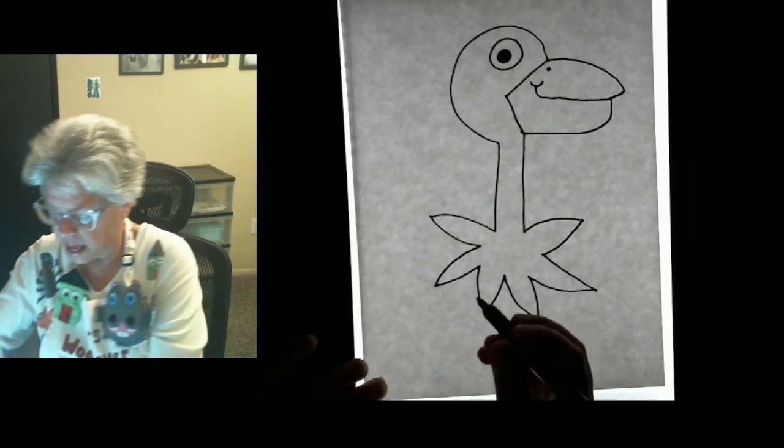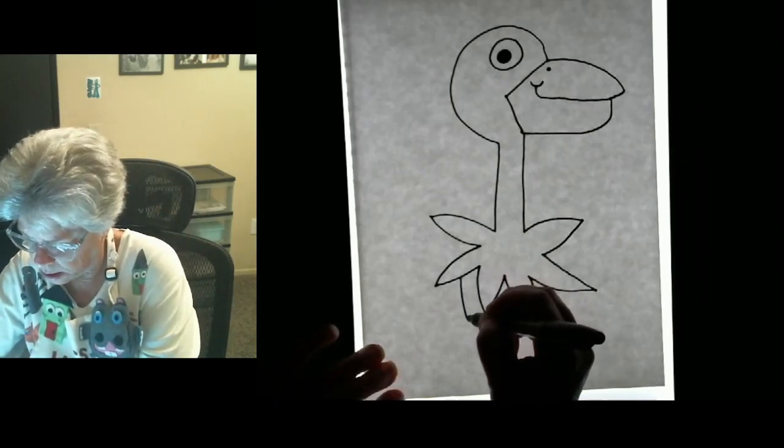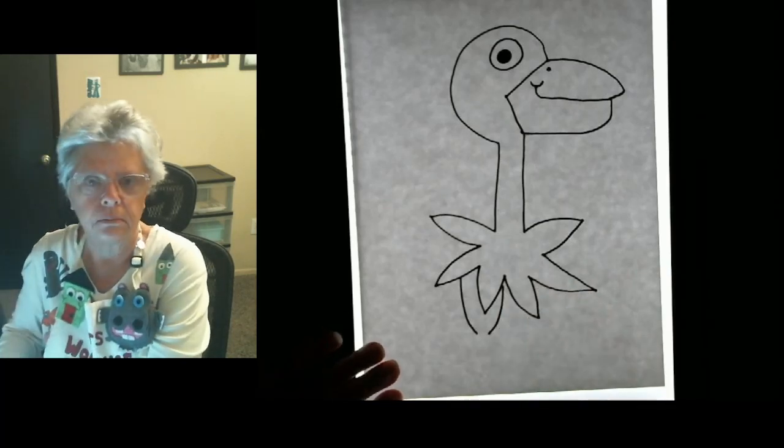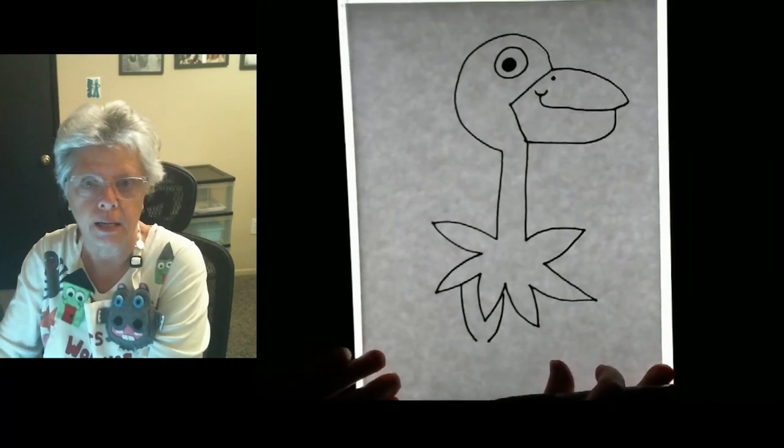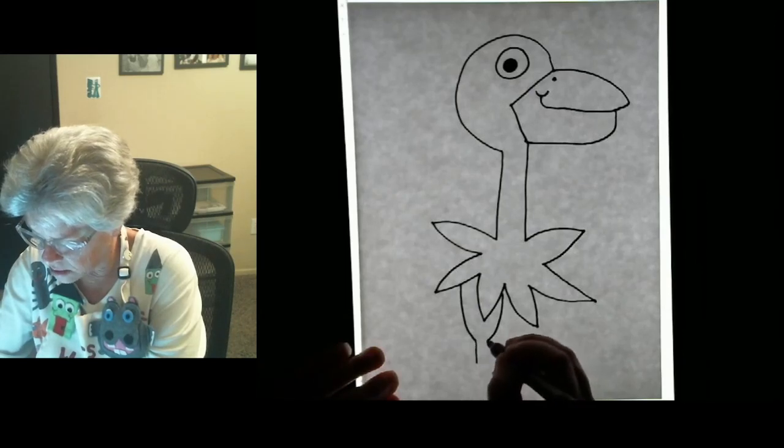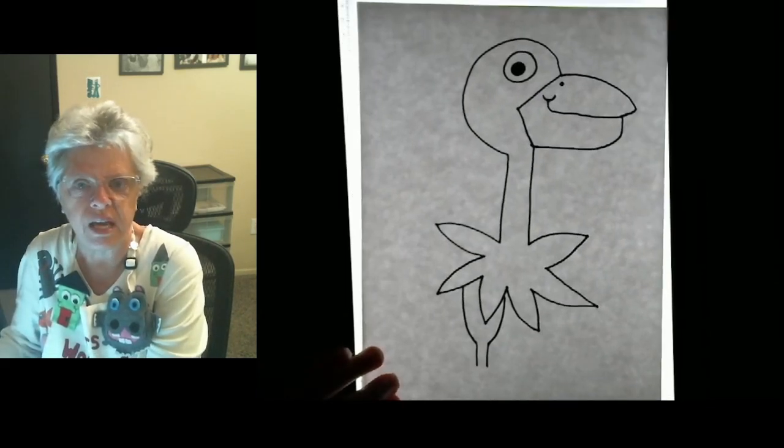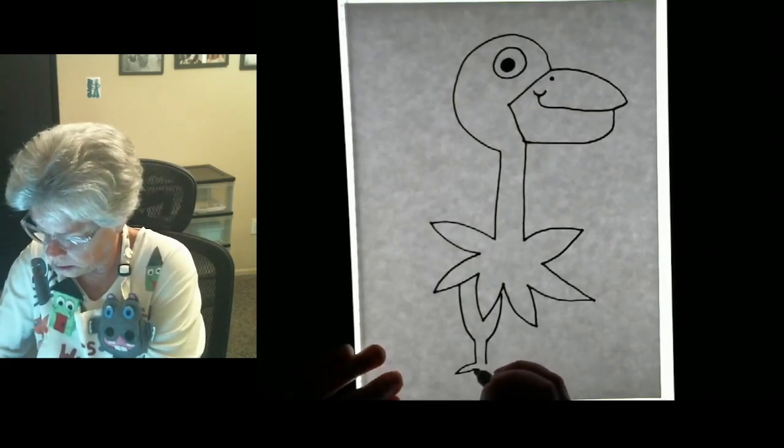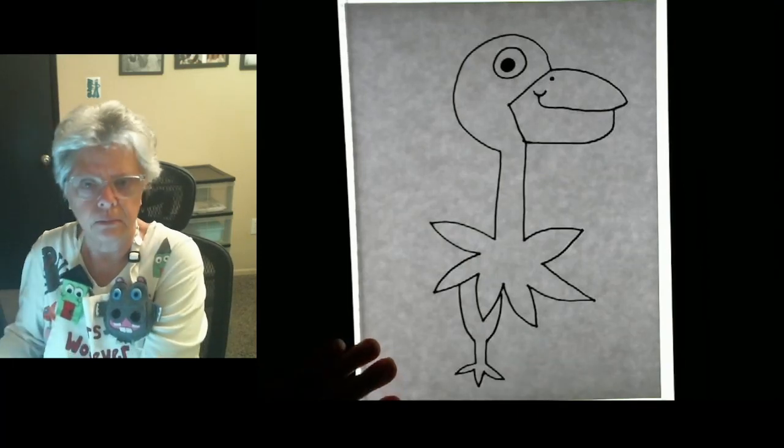All right. Now we need his legs. Now his legs aren't that big. You're going to come from those feathers like that. There's one thigh. There's one thigh. Ostrich thigh. Then his little leg like this. And then we're going to give him his little feet. Three feet. One, two, three. Just like that.